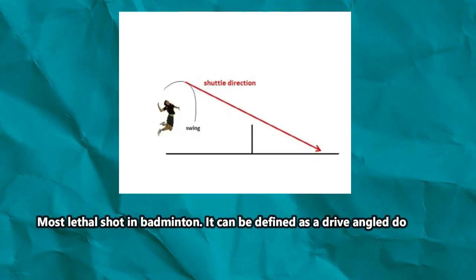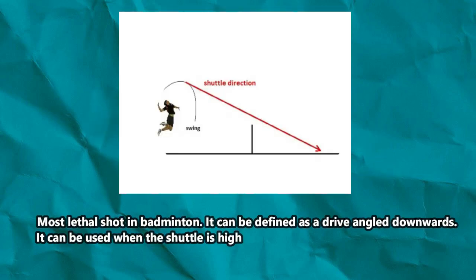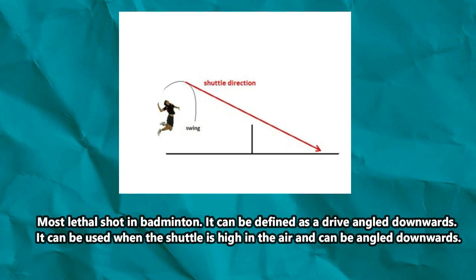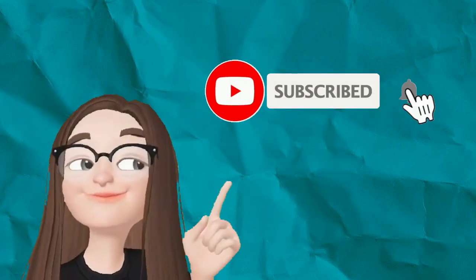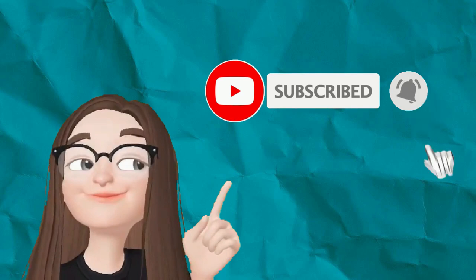The last shot is the smash. It is the most lethal shot in badminton and can be defined as a drive angled downwards. It is used when the shuttle is high in the air and can be angled downward. And that is all about badminton — thank you for watching.